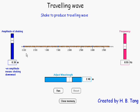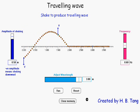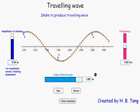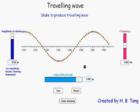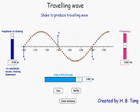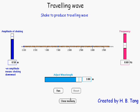Let us adjust the amplitude to be 0.50 meter, frequency 0.60 hertz, and the wavelength 3.00 meters, and run the simulation. Let us stop and reset it.